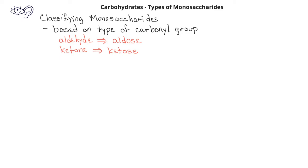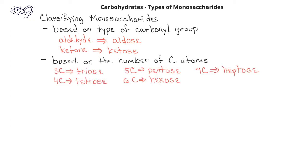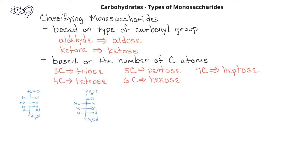We can also identify monosaccharides based on the number of carbon atoms that are present. If there are three carbons in the structure, this would be referred to as a triose. With four carbons, it would be a tetrose. A five-carbon monosaccharide is a pentose, a six-carbon monosaccharide is a hexose, and a seven-carbon monosaccharide would be a heptose.